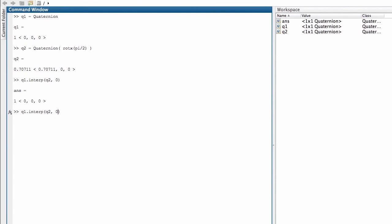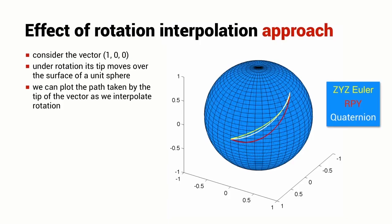I can repeat that and ask for the final point in the interpolation and that is equal to the second quaternion. I can ask now for a point that's midway between 0.5 and this is the interpolated quaternion. And of course, I can turn that back into a rotation matrix using the R method.